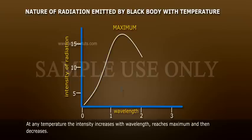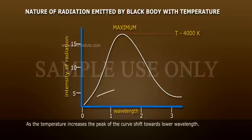At any temperature, the intensity increases with wavelength, reaches maximum, and then decreases. As the temperature increases, the peak of the curve shifts towards the lower wavelength.